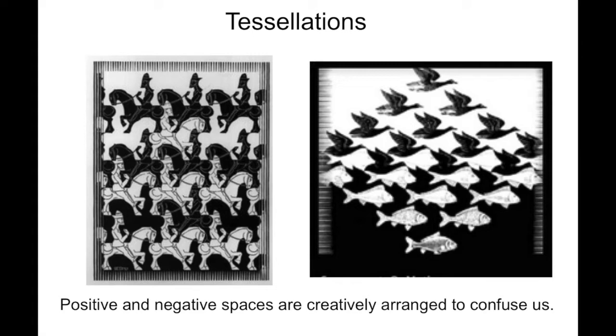Positive and negative spaces are creatively arranged to confuse us. This is called mental imagery.